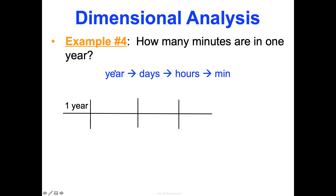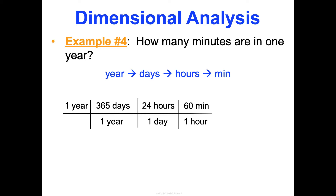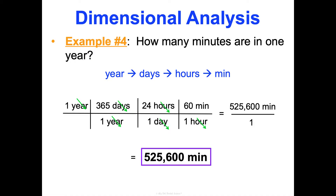First, years to days: there are 365 days in a year, so we write it with years opposite so they cancel. Now days to hours: there are 24 hours in one day — write days opposite so they cancel, leaving hours. Then hours to minutes: one hour is 60 minutes — write hours opposite, leaving minutes. That cancels years, days, and hours, leaving minutes. Multiplying across the top: 1 × 365 × 24 × 60 = 525,600. Divided by 1 × 1 × 1 = 1. So there are 525,600 minutes in one year.